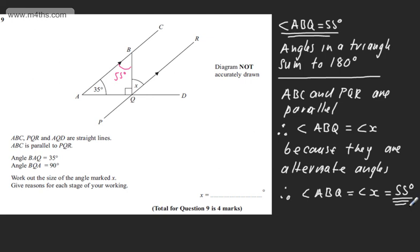simply because if these are parallel lines, angle ABQ is going to be equal to angle X because they're alternate angles, and it's going to give us now a 55 degree angle.